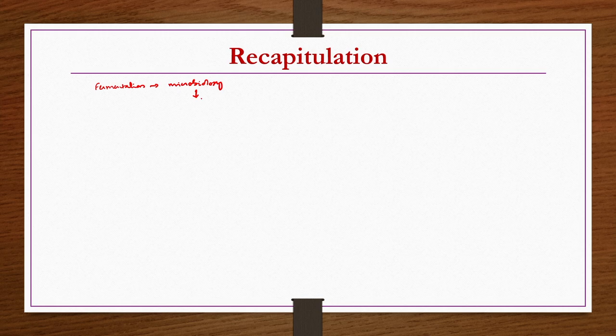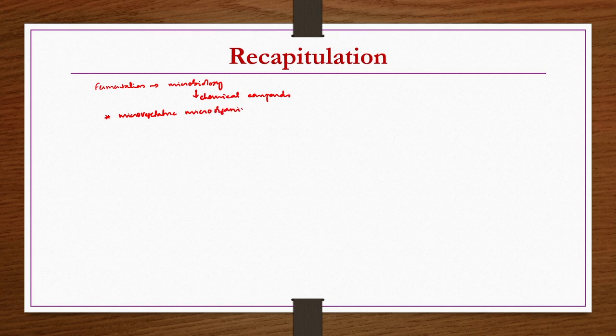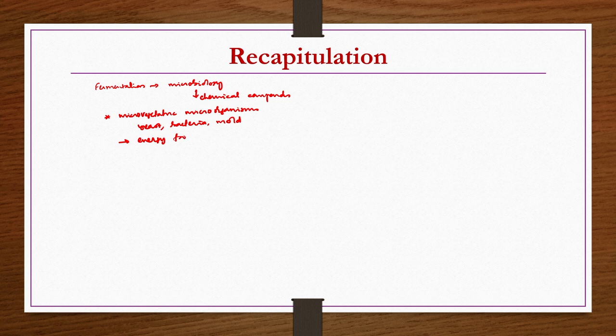Before going into the details of today's lecture, we will have a recapitulation of what we have discussed in the last couple of lectures on fermentation industry. Fermentation industry — we started with the basics of fermentation and realized it utilizes microbiology to produce chemical compounds. The process includes microvegetative microorganisms such as yeast, bacteria, mould, etc. When these are fed with energy food along with nutrients, they utilize the substrate or raw material, grow in size, and also produce some chemicals.